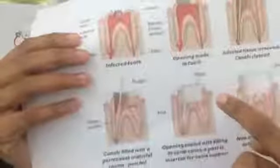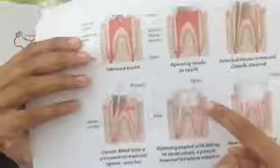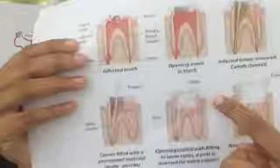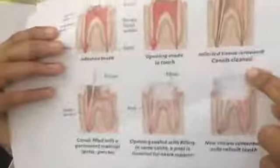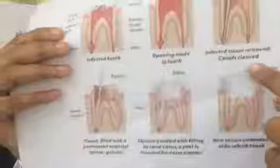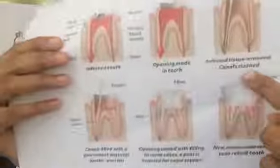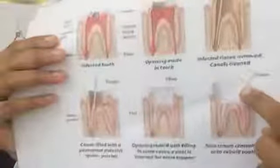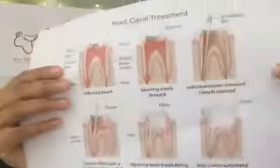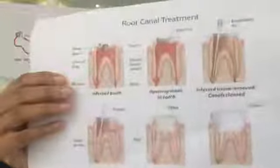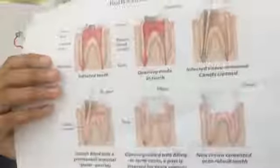Sometimes, if there is a significant loss of tooth structure, your dentist may advise you to go for a crown as well. This crown will help to protect the remaining tooth structure and allow you to chew normally. These are the various steps involved in root canal treatment.